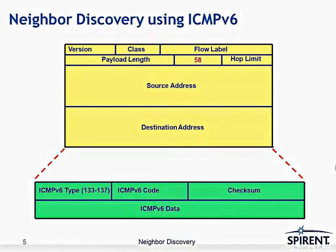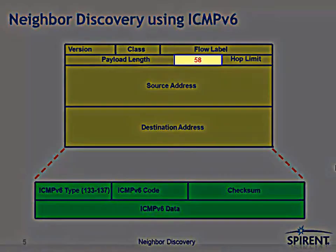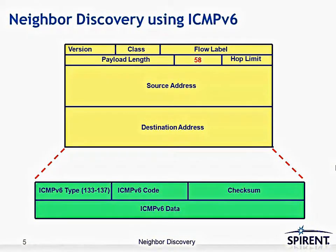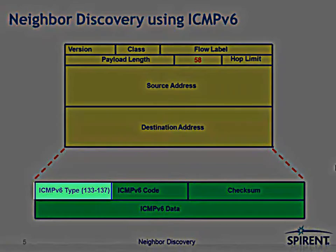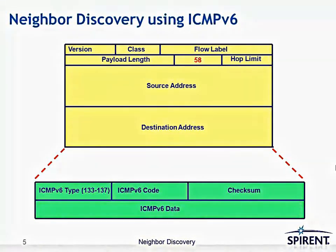The IP header has the next header field set to 58, which is the value that indicates ICMPv6. Then you have the ICMP header — the common header — which includes type, code, and checksum, followed by data. ICMP type messages 133 through 137 are used for Neighbor Discovery messages.